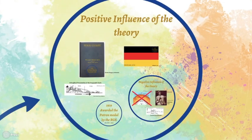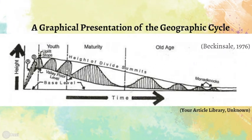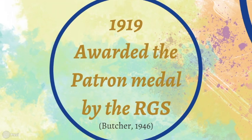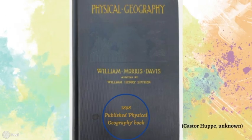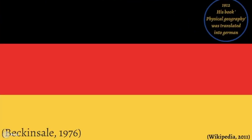His theory inspired the International School of Geographical Artists, who developed diagrams explaining the theory, increasing its educational value. D.W. Johnson, an American geomorphologist, was inspired by his theory and went on to observe erosion along the Atlantic coast. Davis' publication Physical Geography was translated into German in 1912, gaining a huge following of the theory in Germany and inspiring young geographers.